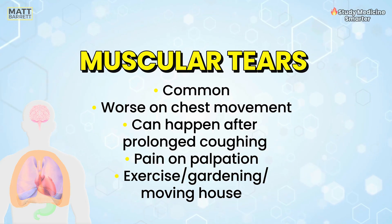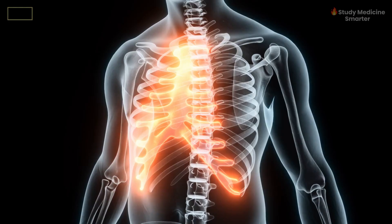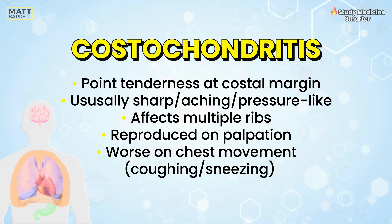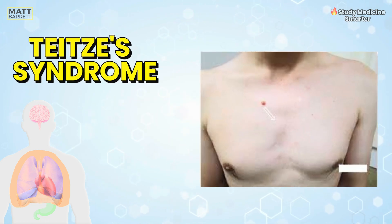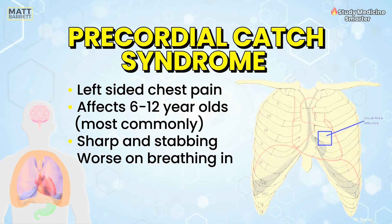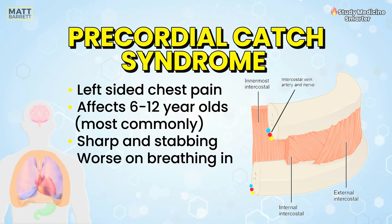Onto musculoskeletal conditions — again a very common cause of chest pain. A muscular tear can happen if you're doing something strenuous — think of those who are doing gardening, moving house or otherwise torsional rotation activities. Costochondritis is inflammation where the costal cartilage meets the bone. This is usually a diagnosis of exclusion, but if there is pinpoint tenderness over a specific part of the ribs, then you may want to think of costochondritis. Don't confuse this with Tietze's syndrome, which is very similar but also involves a painful swelling in the skin. Lastly, precordial catch syndrome — a very common condition; we don't really know what causes it. It tends to happen in children and is characterised by sharp pain lasting up to about 30 minutes, due to intercostal muscle spasm triggering the nerve endings.